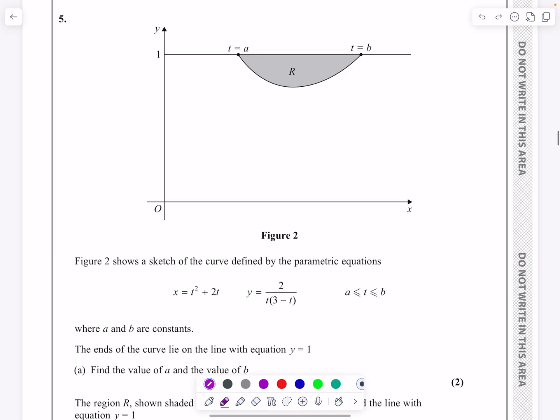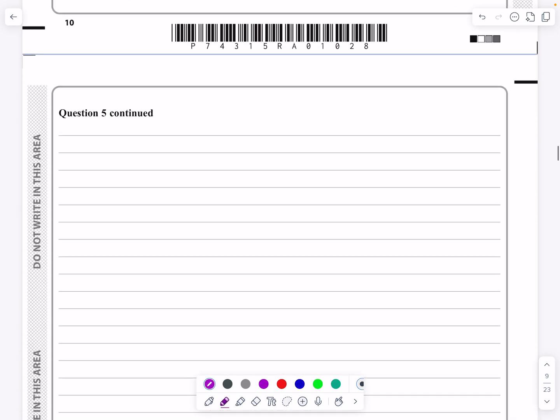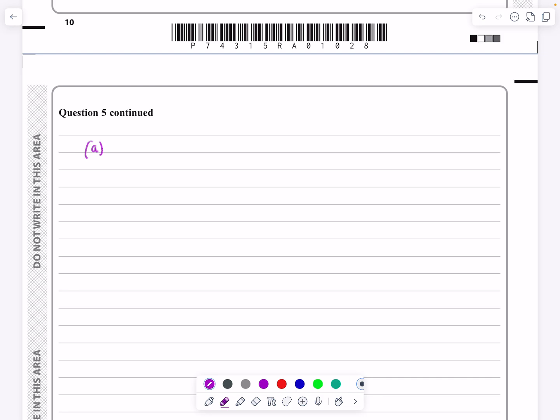For part A, it says the ends of the curve lie on the line with equation Y equals one. Can I find the value of A and B? Yeah, absolutely I can, because that's simply going to be both of these values for T equals A and T equals B will be where Y equals one. So for A and B, Y is equal to one, which is two over T times three minus T equals one. So I'm just going to solve that now, multiply everything by T times three minus T.